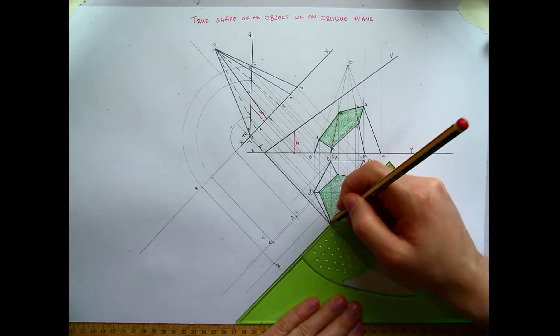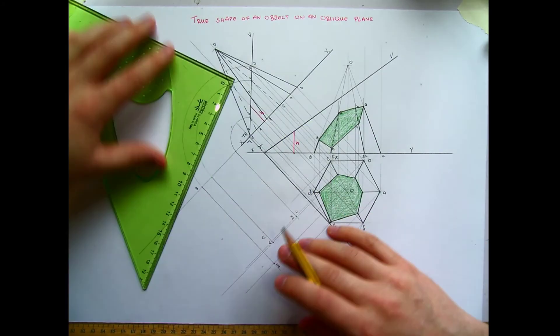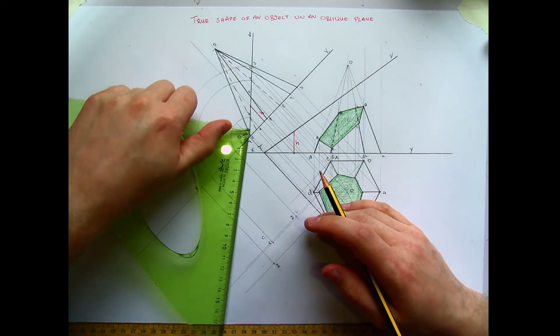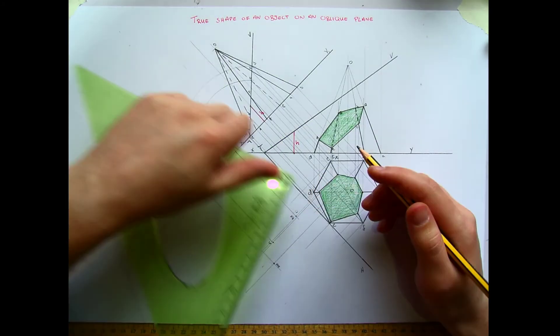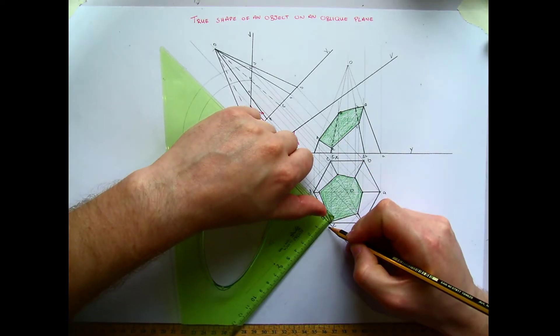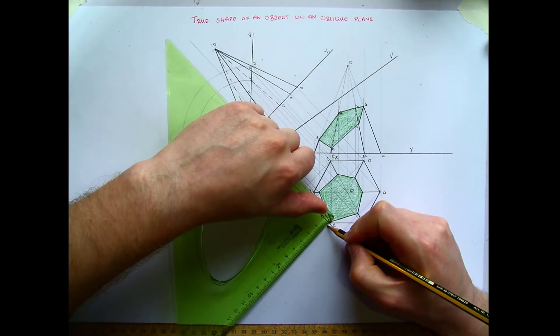E is kind of a tricky one. It's going to be quite close. So for this it might be easier just to measure the distance back that it is. I've got 2 millimeters. So that would be here. That's e.